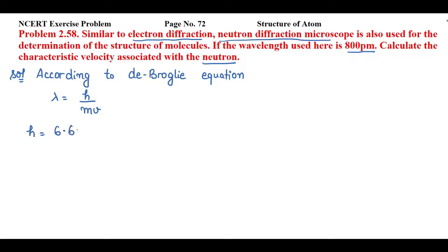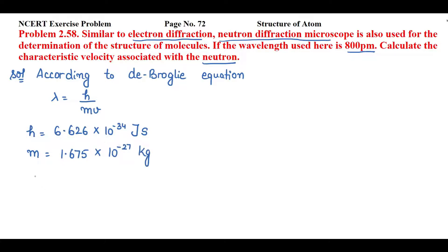Here, h is Planck's constant, which is 6.626 × 10⁻³⁴ joule·second. Now m is the mass of the neutron — you are not supposed to take the mass of the electron here. The mass of neutron is 1.675 × 10⁻²⁷ kg. Lambda is given as 800 picometers, and we have to find velocity.